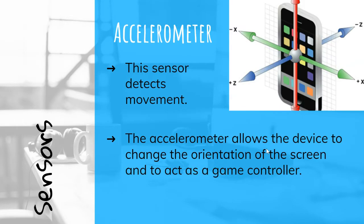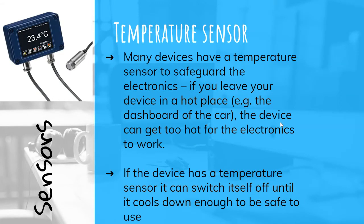Accelerometer: This senses movement and allows the device to change the orientation of the screen. It also acts as a game controller, so you can move the phone while playing games and it will respond. Temperature sensor: Many devices have a temperature sensor to safeguard the electronics.